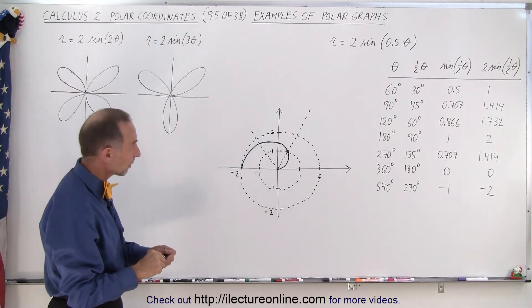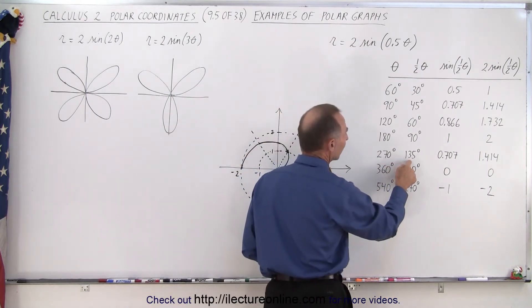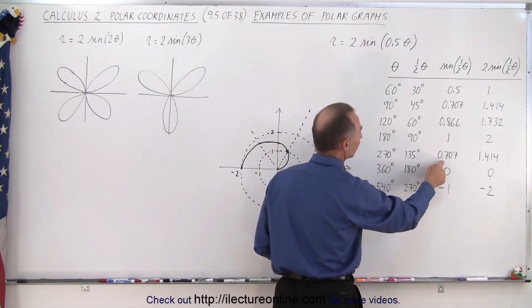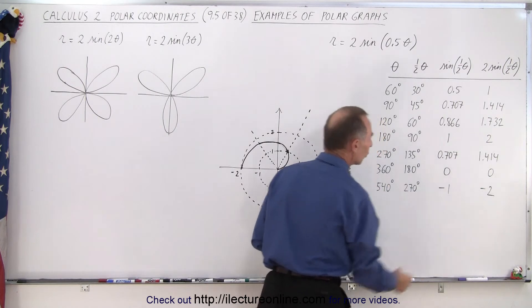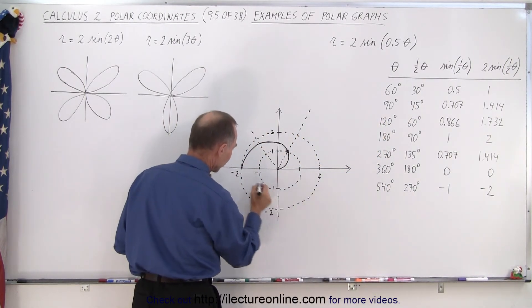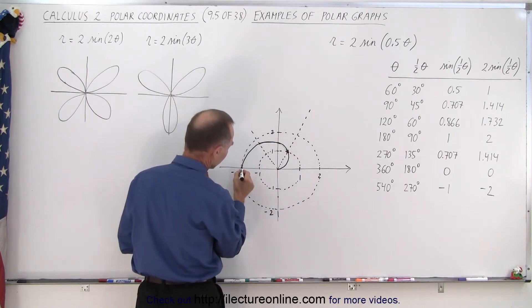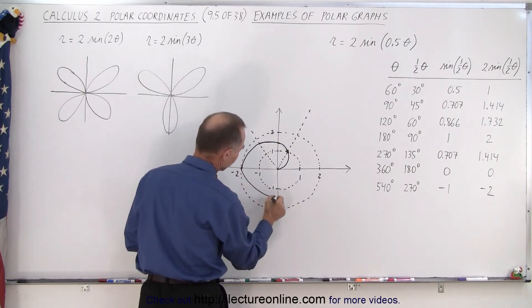Now jumping to 270 degrees, which is straight down. Half of that is 135. The sine of 135 is 0.707, double that is 1.414. So now we're pointing straight down, we're at 1.4. You can see that now we seem to be getting the mirror image on the other side. So that looks like this.